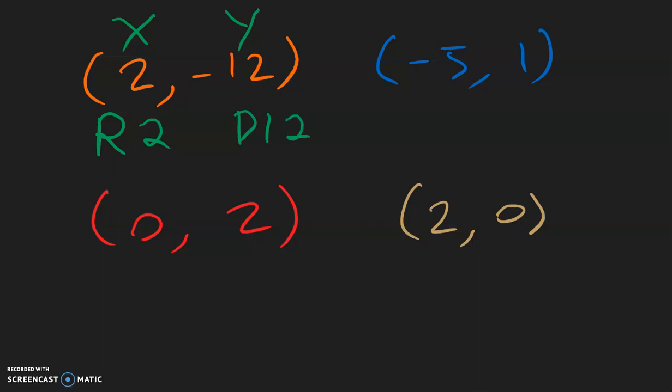Now for the blue example, everything is opposite. The x is negative, so negative x — remember x is left and right — so negative x is going to the left, 5 spaces. And the y is positive, so up and down, positive is going up 1 space.